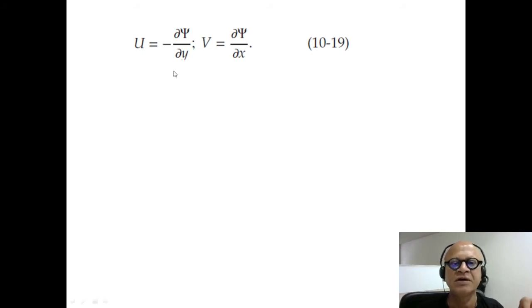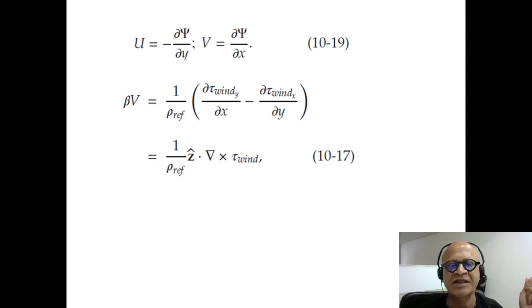So the stream function here can be related to the velocity. You know from your basics that the flow is tangential to the streamlines, so in two dimensions we have U equals minus d psi dy and V is d psi dx. So this can be related to our theory now.